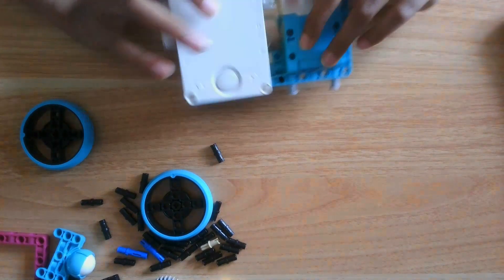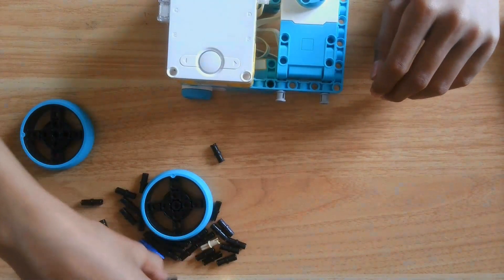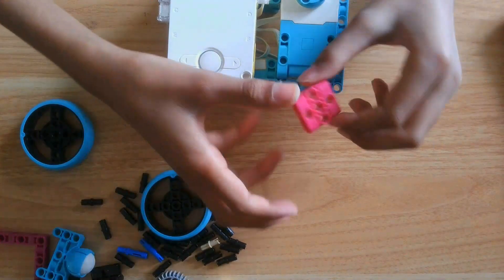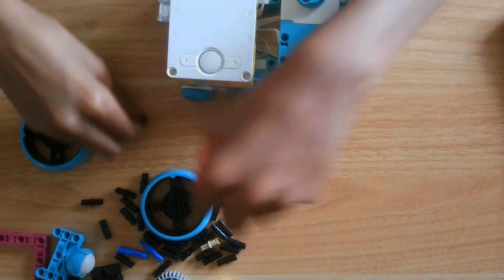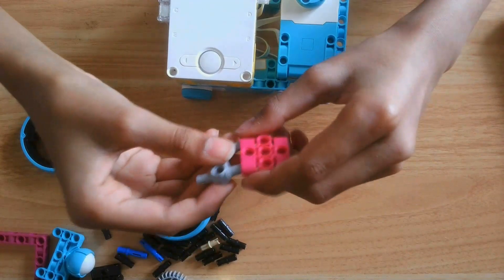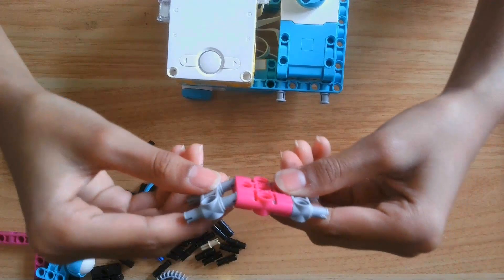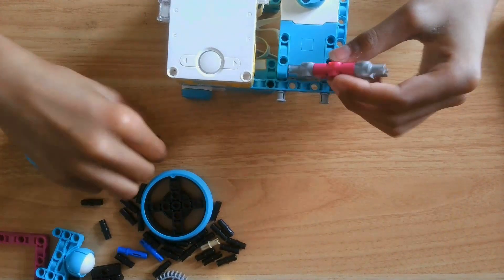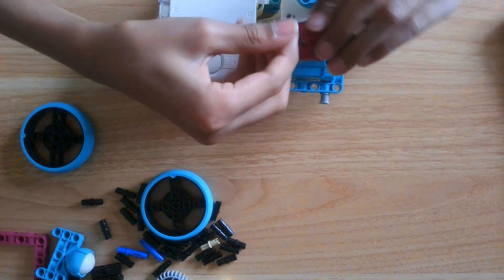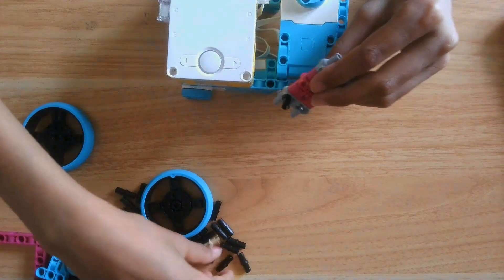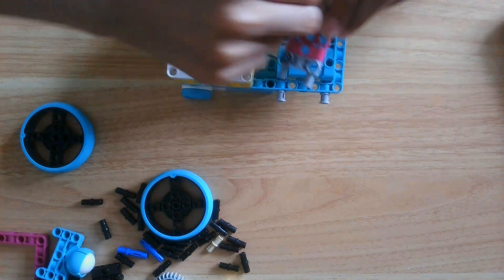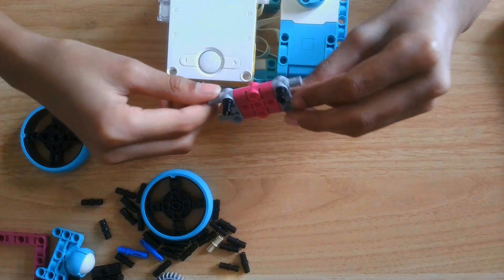Now, what you want to do is you want to get one square frame, which is three by three. And you're going to want to get two of these and get two pins to form a structure like this.